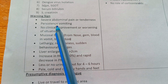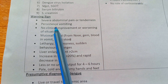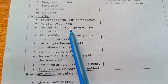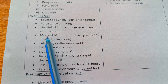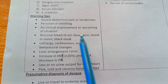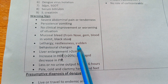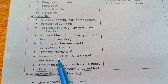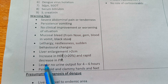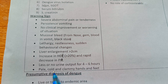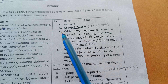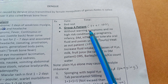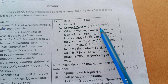Warning signs include severe abdominal pain or tenderness, persistent vomiting, no clinical improvement or worsening, mucosal bleeding from nose or gums, blood in vomit, black stools, lethargy, restlessness, sudden behavior changes, liver enlargement, increase in HCT with decrease in platelet count, little or no urine output for four to six hours, and cold and clammy hands and feet.